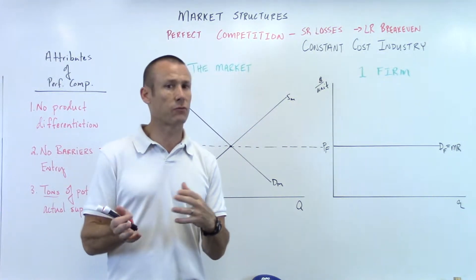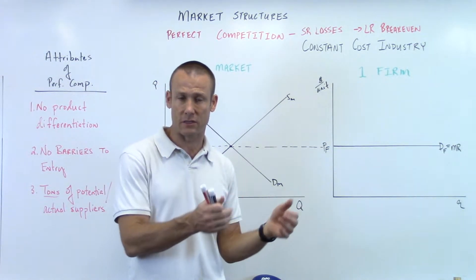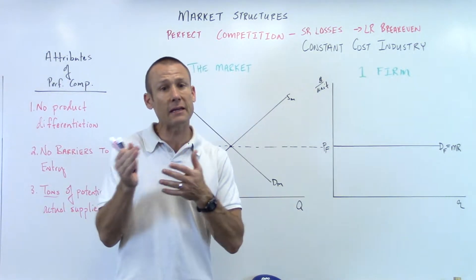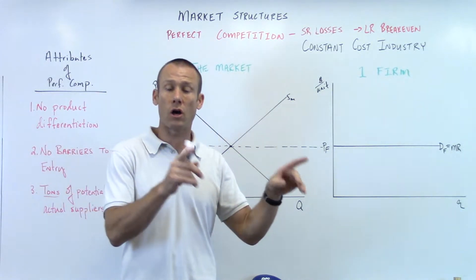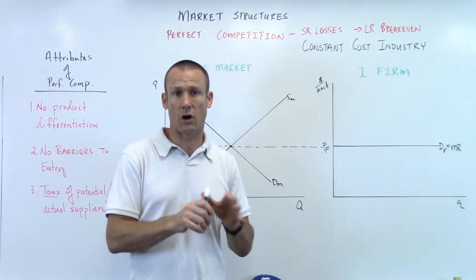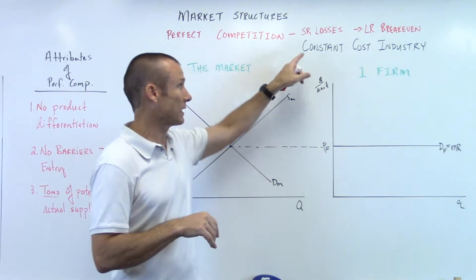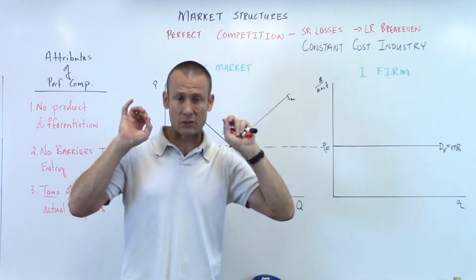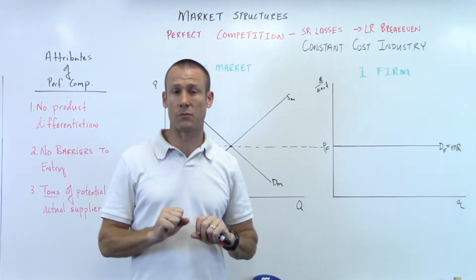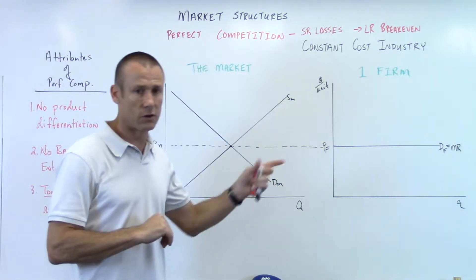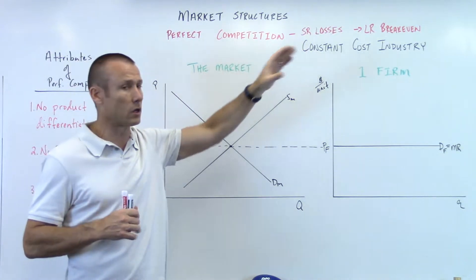That means we're not going to shift the MC or the ATC curves when the supply market changes. That is not what would be the case if we had an increasing cost industry. In an increasing cost industry, anytime we shift the supply market, we should also shift the cost curves. But that's not what we're doing here because we've got constant cost industry — those cost curves are staying constant.